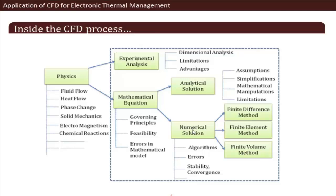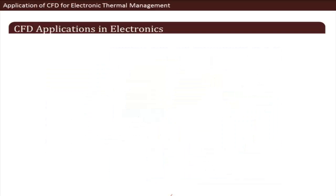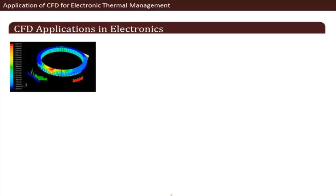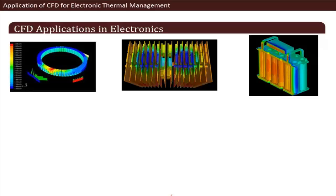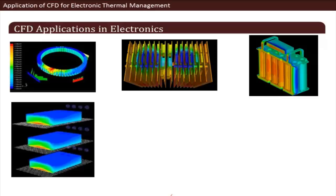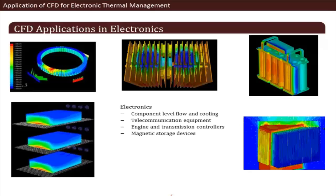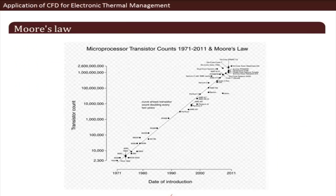Now that we understand what CFD is, we'll look at its application within the electronics field. Electronics has applications in many fields like aerospace, controls, and transmission. Within the electronic domain, we encounter simulations at component level, flow and cooling in telecommunication equipment, engine and transmission controls, magnetic storage devices, and coupling of electromagnetic simulation with CFD is now standard practice.